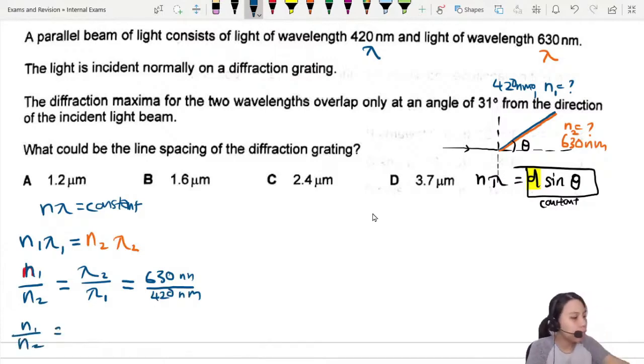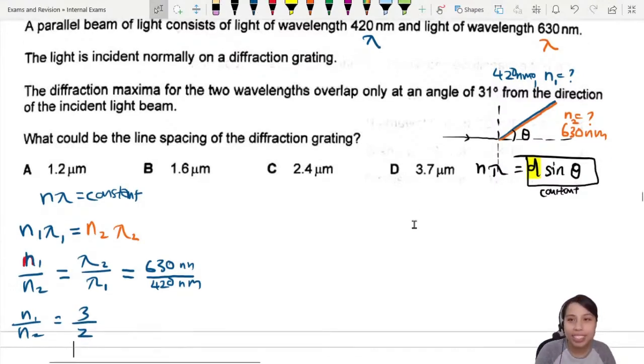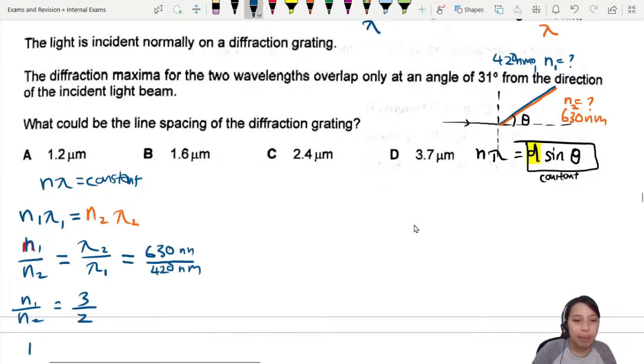This will give us a nice ratio n1 over n2. Let me check the calculator: 630 divided by 420 is 3 over 2. How is this helpful? This is telling me that n1 is 3 over 2 times n2. That's a good start. I'm just going to leave that there. Normally during an exam, if you come across this type of question and you're not sure where to proceed, it's okay to skip to the next one.